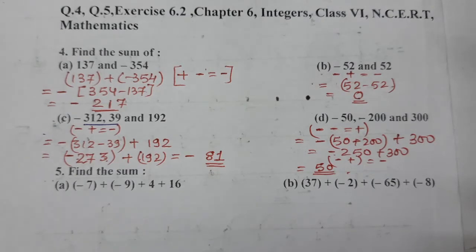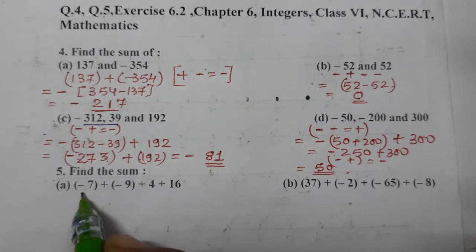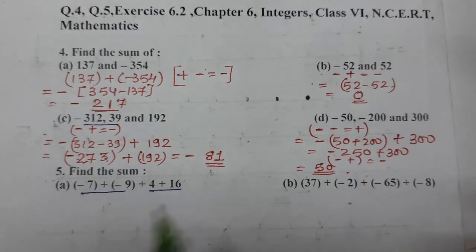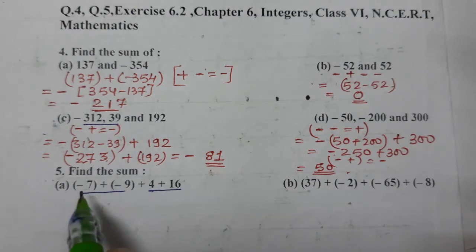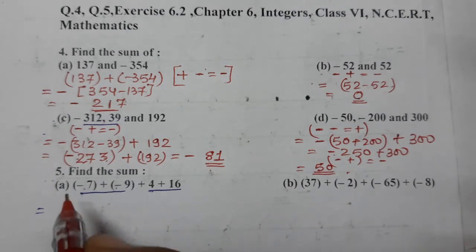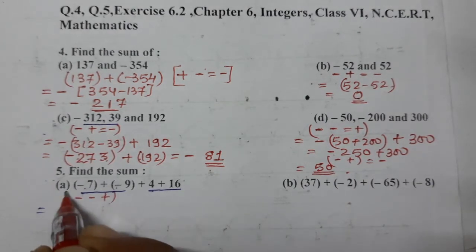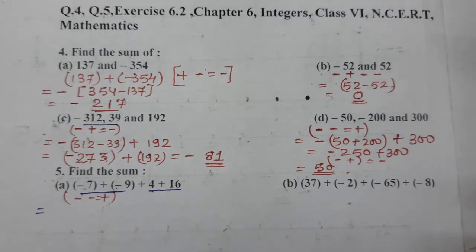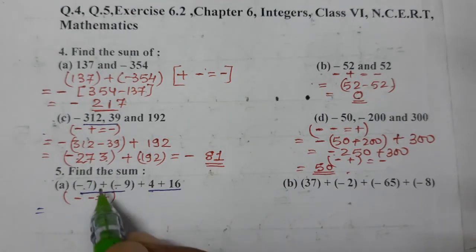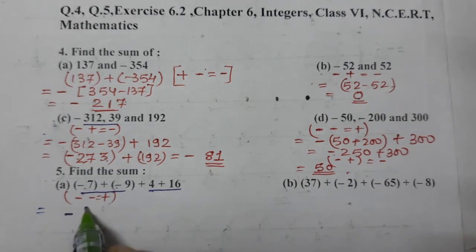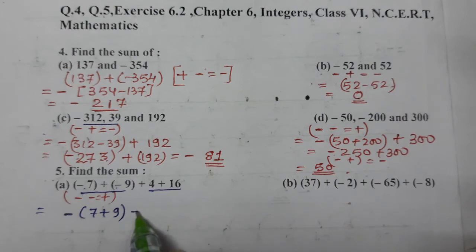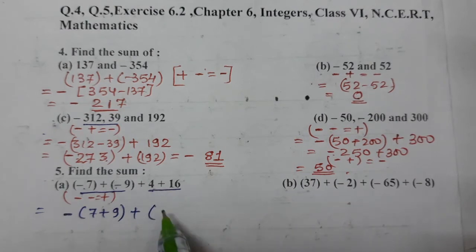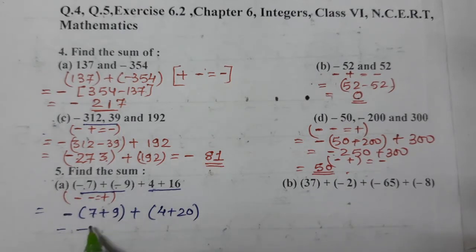Now we'll do question number 5. Ek baar mein do numbers ka pair bana lete hain. Minus minus plus hota hai — dono negative hain to minus minus plus hoga. Sign negative ka aayega. So negative 7 plus 9 — both are positive, so we add: minus 7 and 9 kitna hua 16, aur yeh kitna hua 24.